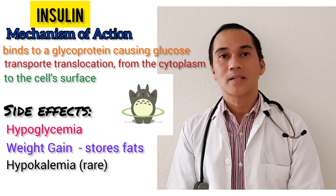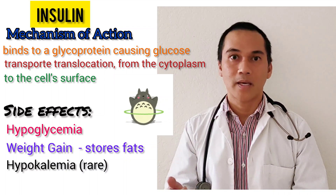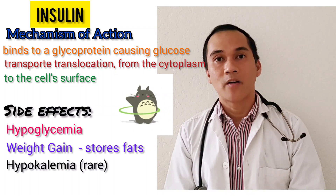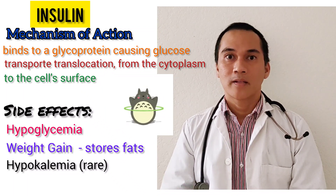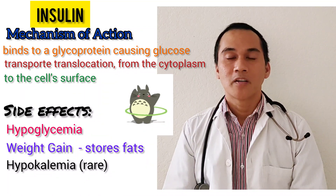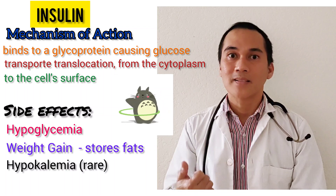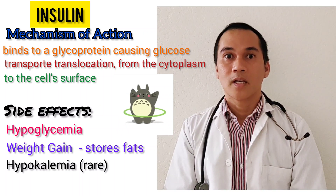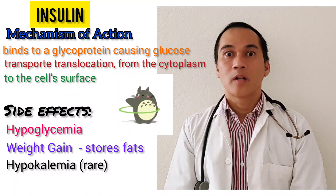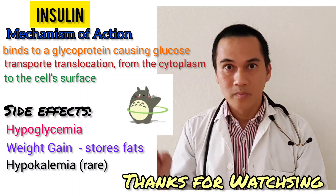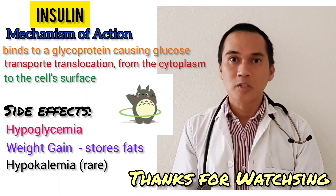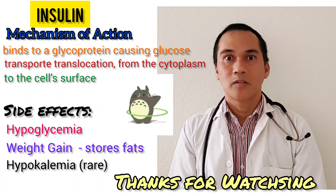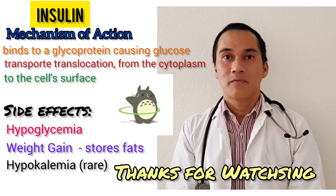Side effects of insulin include hypoglycemia and weight gain. Weight gain occurs because insulin is anabolic — it builds up fat storage and prevents breakdown of triglycerides. More insulin means more weight. Insulin can also cause hypokalemia. When a patient presents with a potassium level of 6-something, you give a cocktail that includes insulin, albuterol nebulization, D50, and calcium gluconate. Insulin and albuterol lower potassium by shifting it back into the cells. Calcium gluconate stabilizes the heart without affecting potassium levels. D50 is given to counter the hypoglycemic effect of insulin. That is all, and I hope you enjoy this series.